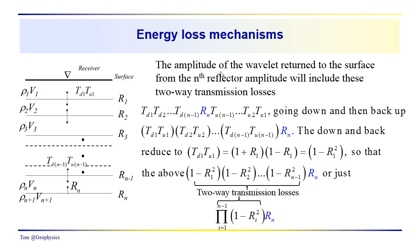We spent a good bit of time talking about the transmission loss associated with a wavefront as it travels down to some reflector — let's say reflector N — and then back to the surface. On its way down, as it passes through each interface, the amplitude of the wavefront is scaled by the transmission coefficient. So as we go down, we have TD1 through the first layer, TD2 times TD2 — the transmission coefficient for the second layer — and so on, all the way down to the reflector surface and then back to the surface again.